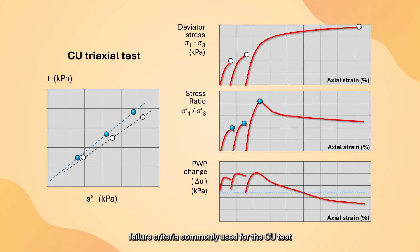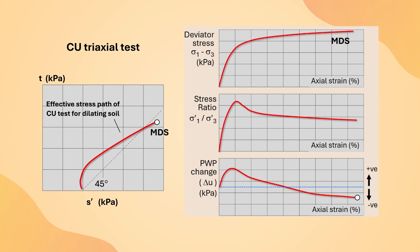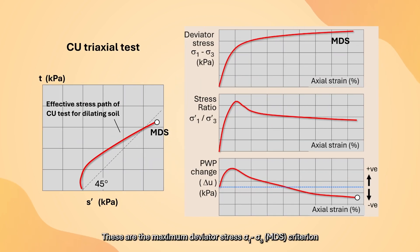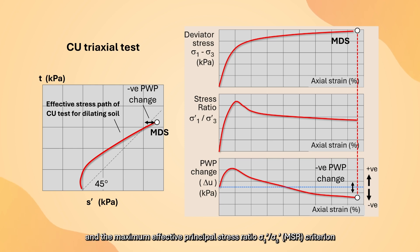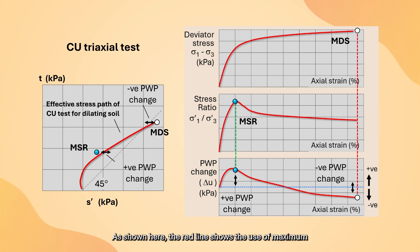We will now discuss the two different failure criteria commonly used for the CU test. These are the maximum deviator stress (σ1 - σ3) MDS criterion and the maximum effective principal stress ratio (σ1' over σ3') MSR criterion. As shown here, the red line shows the use of maximum deviator stress as the failure criterion. This has a different axial strain level and pore water pressure change value at failure when compared to the green line, which shows the use of maximum stress ratio as the failure criterion. Because of these differences, the effective stress shear strength parameters obtained could be different.